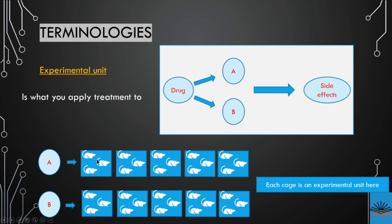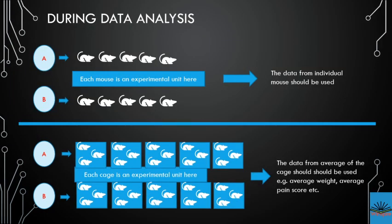When doing data analysis: if each mouse is the experimental unit, data from each individual mouse should be used. But when each cage is the experimental unit, data from the average of the cage should be used — for example, the average weight of the three mice in that cage.